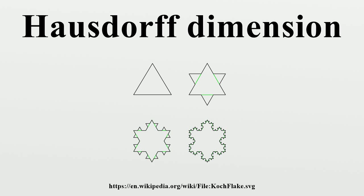Self-similar sets: Many sets defined by a self-similarity condition have dimensions which can be determined explicitly. Roughly, a set E is self-similar if it is the fixed point of a set-valued transformation ψ, that is ψ(E) = E. Theorem: Suppose there are contractive mappings on R^n with contraction constant r_j < 1. Then there is a unique non-empty compact set A satisfying the fixed-point equation, by Stefan Banach's contractive mapping fixed point theorem applied to the complete metric space of non-empty compact subsets of R^n with Hausdorff distance.